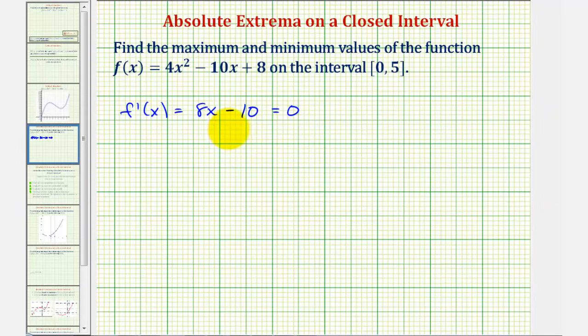So we add 10 to both sides. That would give us 8x equals 10. Divide both sides by 8, and we have x equals 10 eighths or five fourths in simplified form. So we have one critical number.